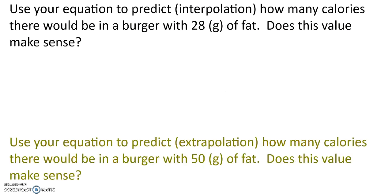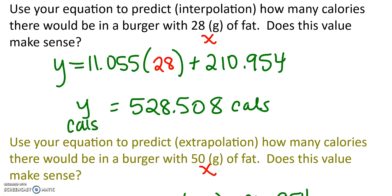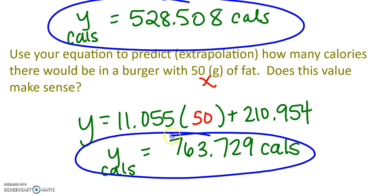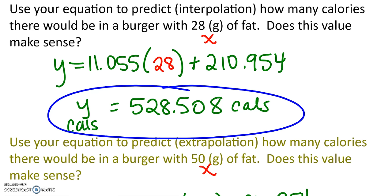So use your equation to predict how many calories there would be with a burger of 28 grams of fat. Then we're going to predict with 50 grams of fat. Well, I'm going to remind you that this was our x variable. So I want you to use the equation that you came up with. You're going to plug in 28 for x, and then you're going to do it again, plugging in 50 for x, and see how many calories those burgers would have. So go ahead and pause your video now and do those two problems. All right, hopefully we came up with a 28 gram of fat burger has 528 calories, and a burger with 50 grams of fat has 763 calories. So I would say that both of these values appear to make sense because the higher the fat, the more calories.